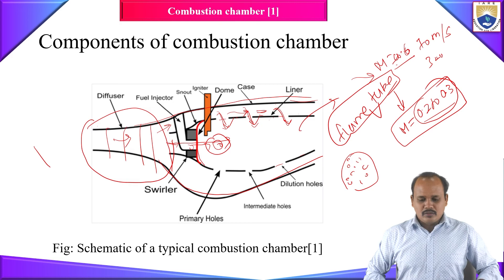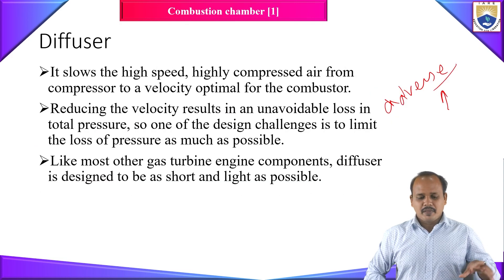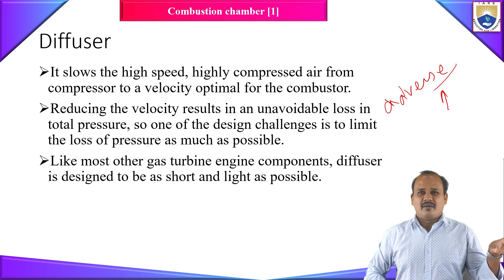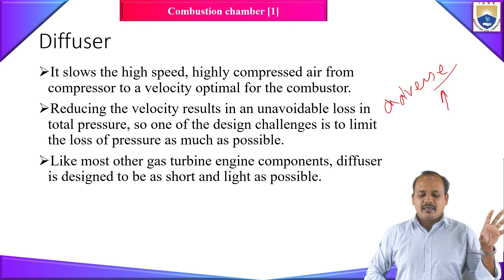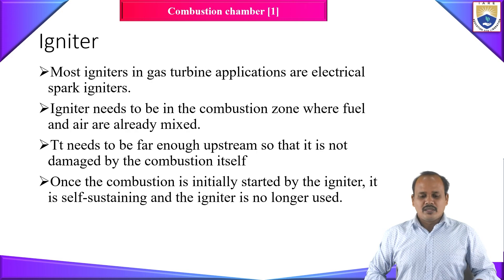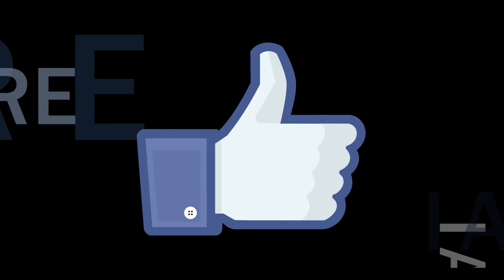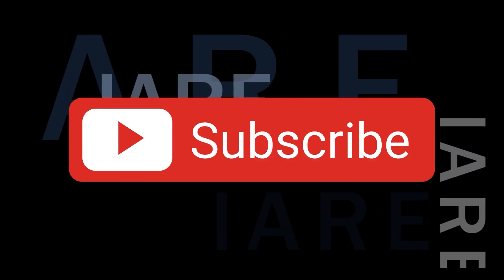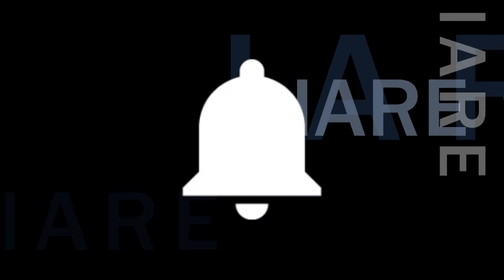To summarize what we have discussed: we covered the gas turbine combustion chamber, the basic requirements a designed combustion chamber must satisfy, and the components of a combustion chamber — casing (withstands high pressure), liner (withstands high temperature), diffuser (decelerates incoming flow to the required Mach number), dome and swirler (increase turbulence for fuel-air mixing), snout (splits incoming air into primary and secondary flow), igniter (starts the combustion process), and fuel injector (introduces fuel in fine uniform droplets). That concludes today's lecture.